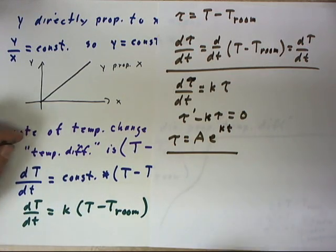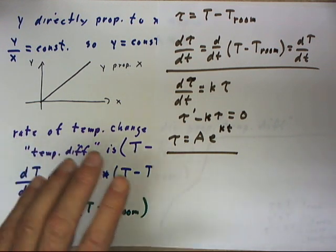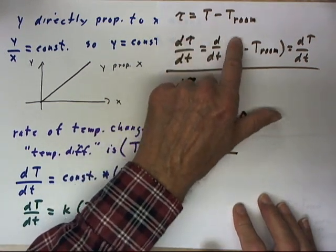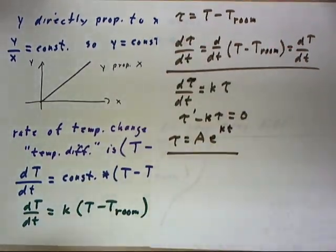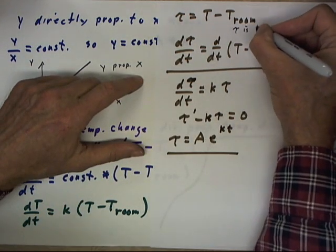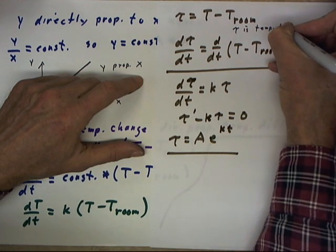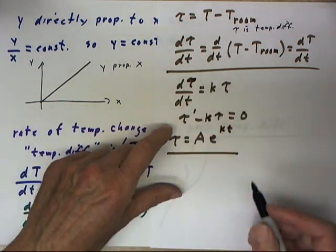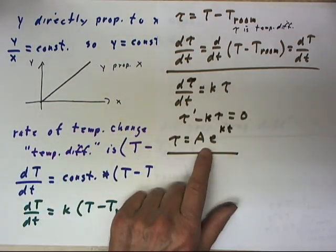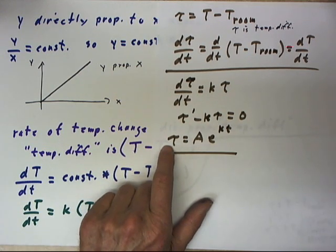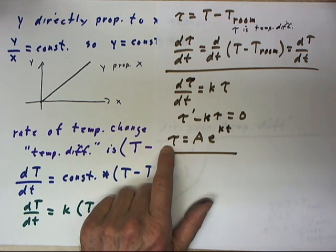We could worry about that in specific instances, but we see that we can take this statement of proportionality between the rate of temperature change and the temperature difference and translate it into the variable tau. We'll notice that tau is the temperature difference and write this equation in a simple form which we've already solved in terms of compound interest.